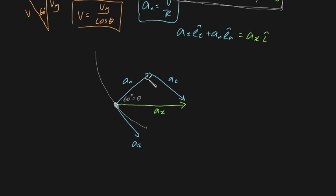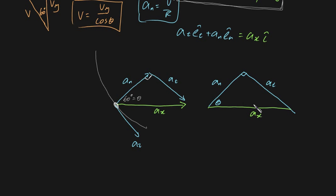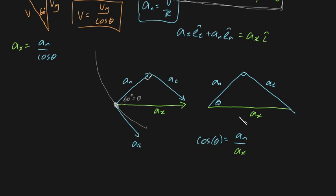We can evaluate ax using trigonometry. Cosine of theta equals an divided by ax — that's adjacent over hypotenuse. We can rearrange to find ax: ax equals an divided by cosine theta. As a checkpoint, there are several ways we could approach this formula. I've solved it graphically by drawing the triangle, but you could also solve it analytically by solving for et, en, and i and plugging in simultaneous equations.